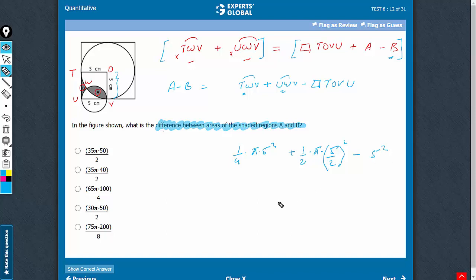So, let's solve this. I got the denominators same and therefore, this turns out to be 75 pi minus 200 all divided by 8. E is the correct answer choice.